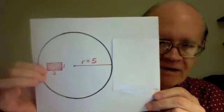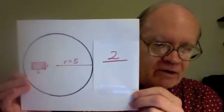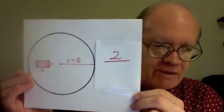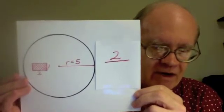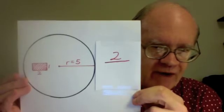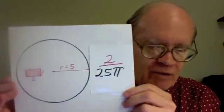Well, the area of the little rectangle is 2 times 1, which is 2. So 2 will be the numerator of the answer. And the area of the circle, the formula is pi r squared. 5 squared is 25. That's 5 times 5. So the area of the circle is 25 pi. And so that's the denominator, the bottom number of the fraction.